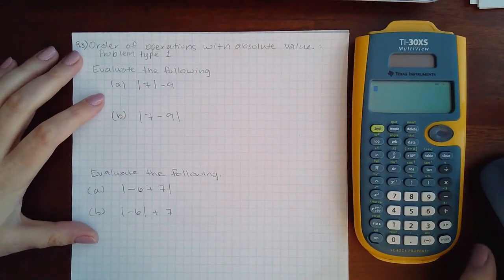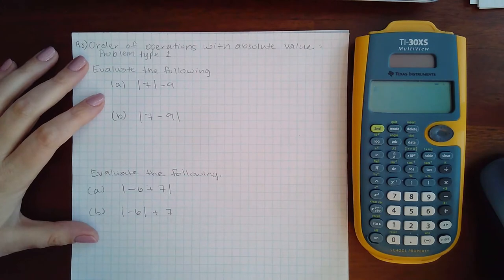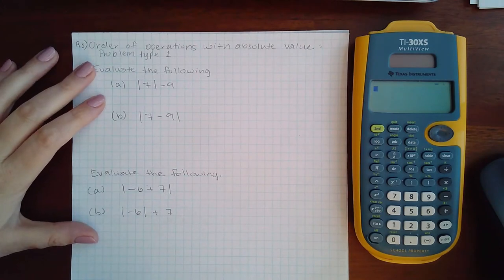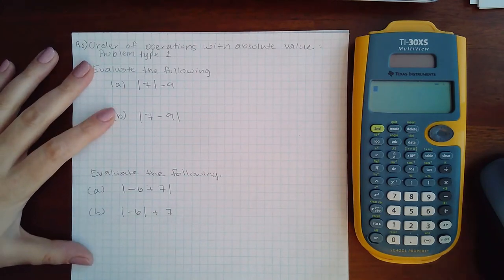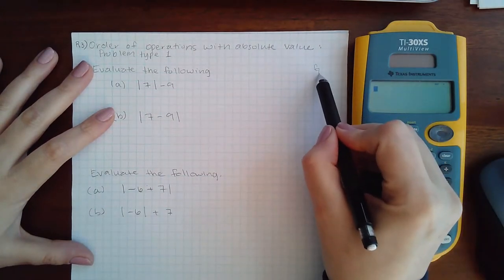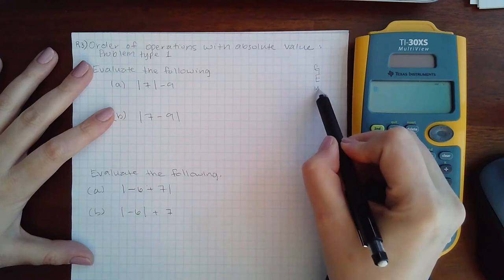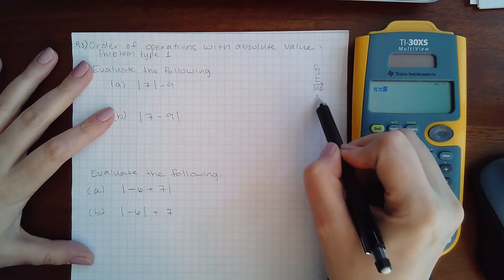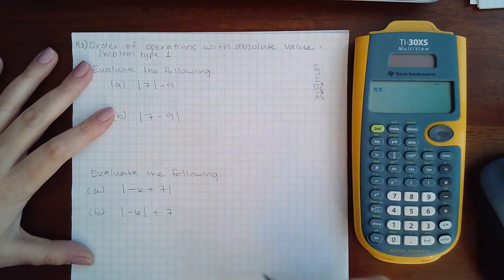Order of operations with absolute value, problem type one. If you remember our order of operations, we have the groups, then the evaluate, then the multiply and divide, and then the add and subtract.